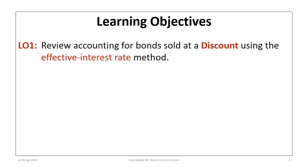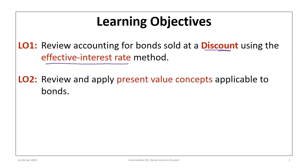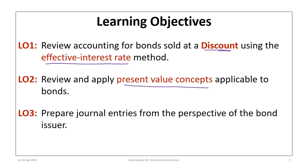This tutorial has three learning objectives. The first is to review accounting for bonds sold at a discount using the effective interest rate method. The second is to review and apply present value concepts applicable to bonds. And third, to prepare any required journal entries from the perspective of the bond issuer.